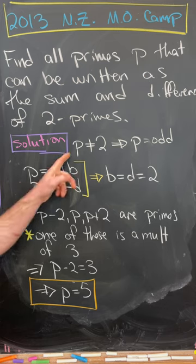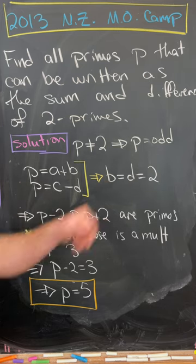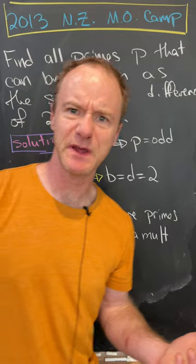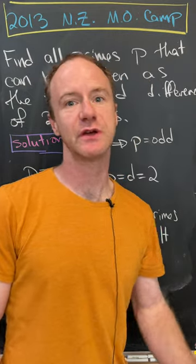Let's notice that p is not allowed to be 2, which means p is odd. That's because 1 is not prime and 2 equals 1 plus 1.